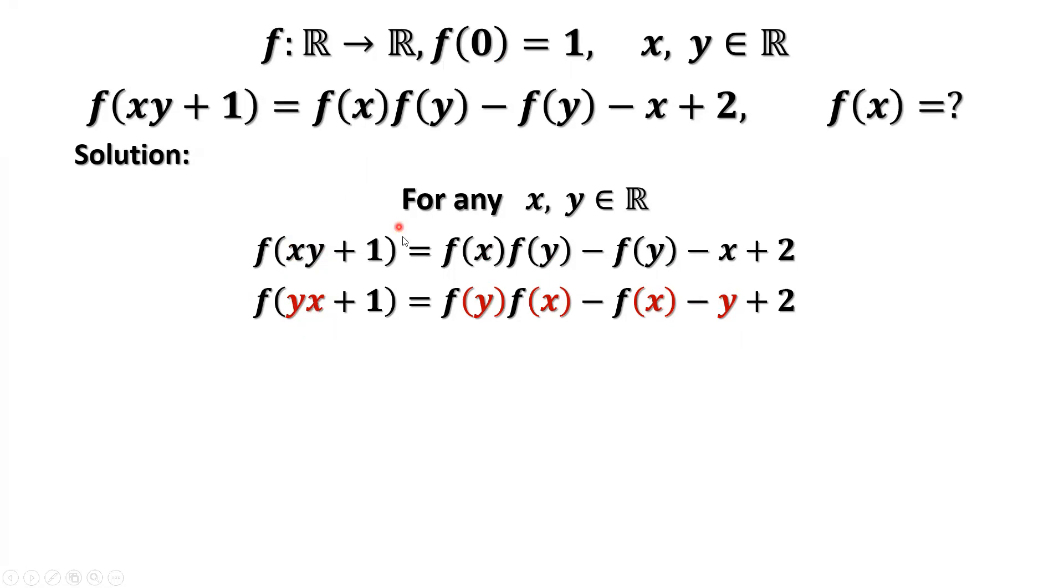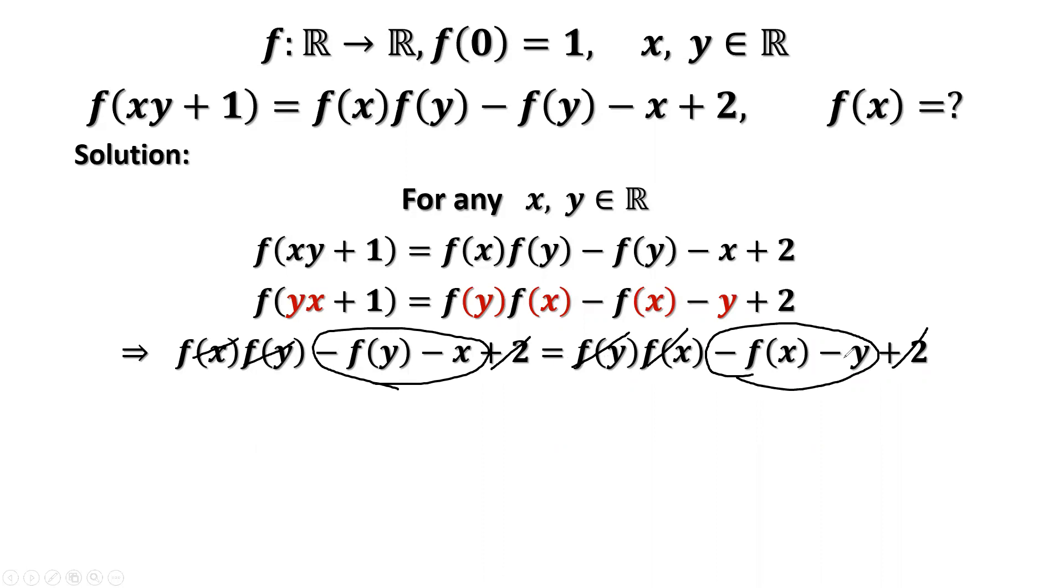Therefore, the left-hand sides are equal. Therefore, the right-hand sides are equal. We can cancel some items from both sides: f(x) times f(y), f(x) times f(y). Positive 2, positive 2. Then we have negative f(y) minus x equals negative f(x) minus y.